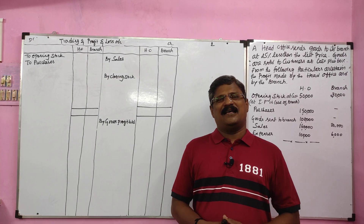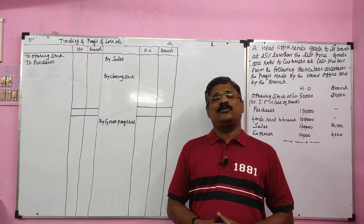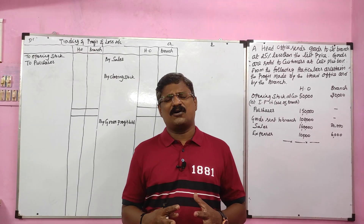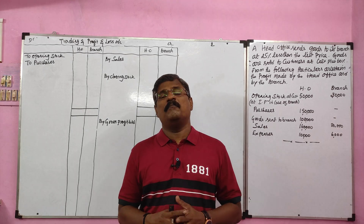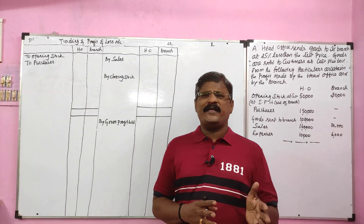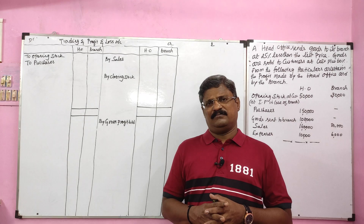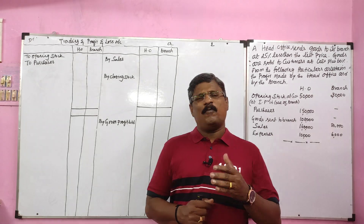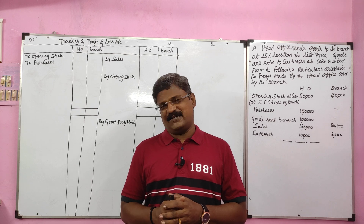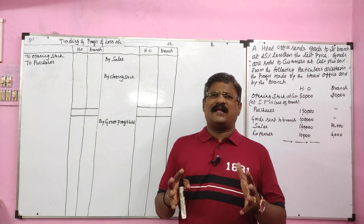Students, in this class we are going to learn one problem in relation to the wholesale branch system. We already solved a similar problem in part 10, where opening stock and closing stock both were not given. But in this problem, opening stock is given and closing stock we have to ascertain.